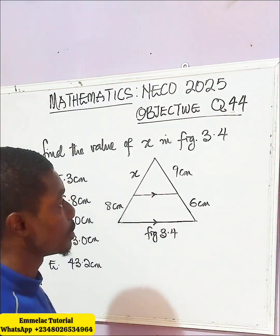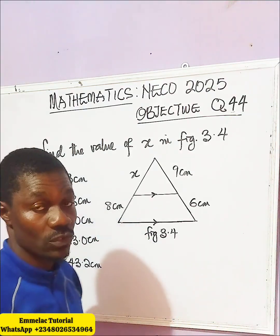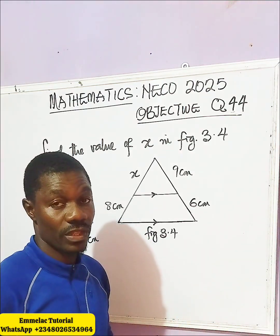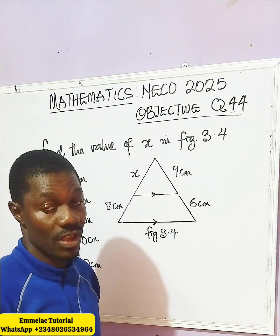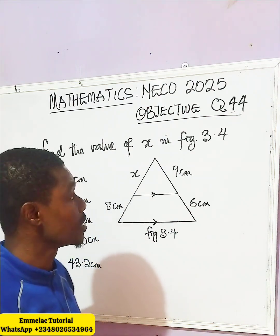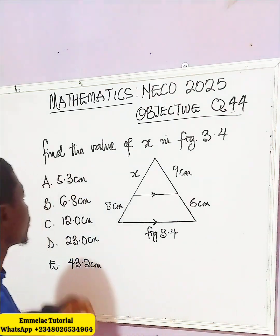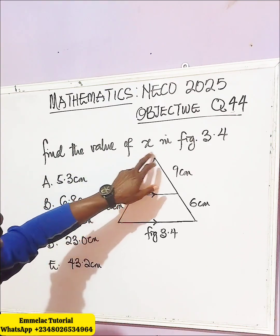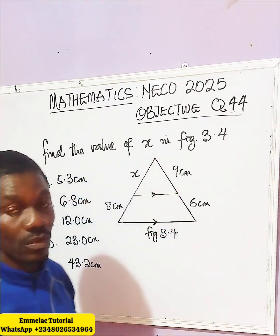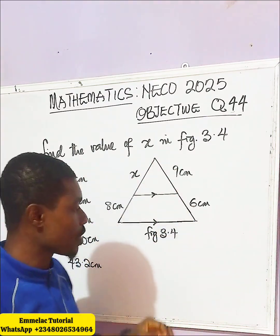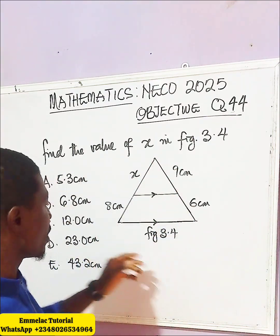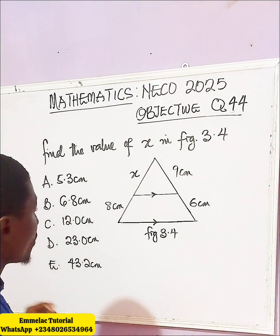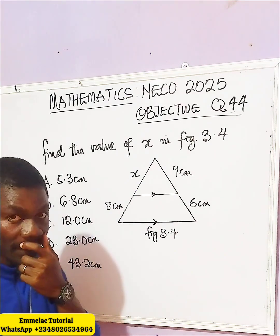Welcome to MilaCon 9 tutorial. Here is question 44 of the NECO 2035 objective question, and it reads: find the value of x in figure 3.4. Here is the figure and here are the options.